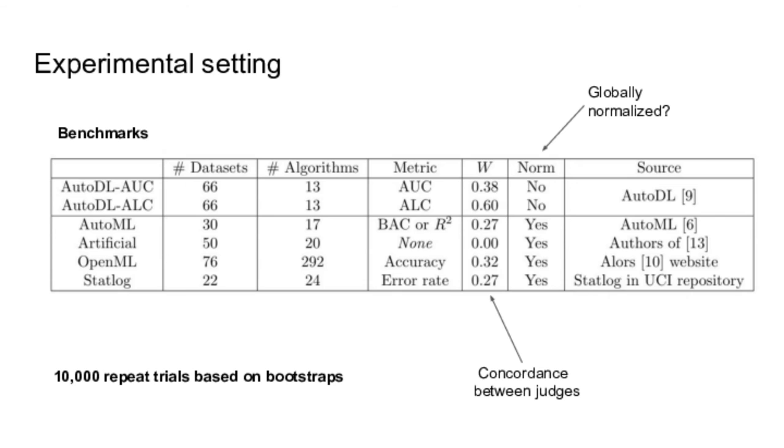So we've evaluated all of this in experiments involving five benchmarks. So four are from real world datasets and one is artificial. And we have many datasets and many algorithms in each, so from 10 to 300. And we repeat the experiments thousands of times each time by doing bootstraps, so either bootstraps on the judges, so the datasets, or bootstraps on the candidates, the algorithms.